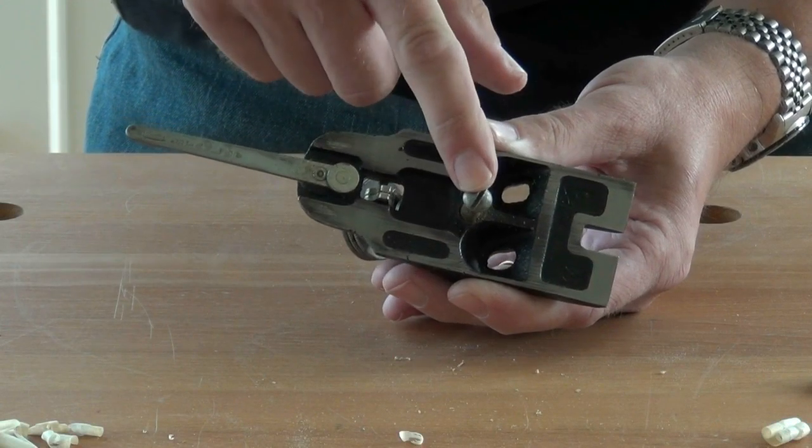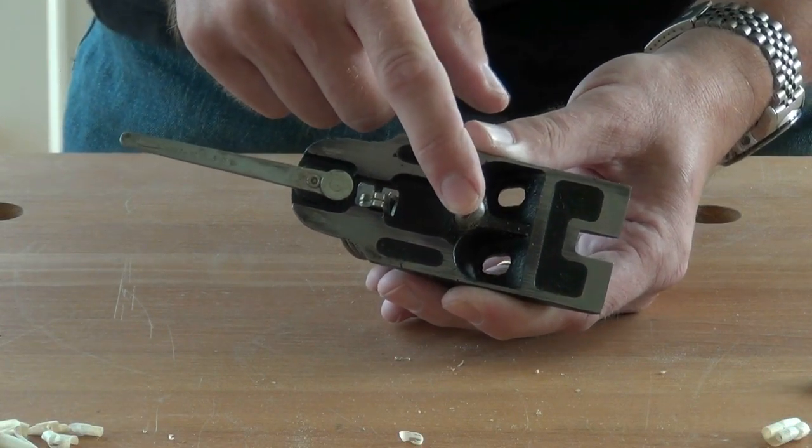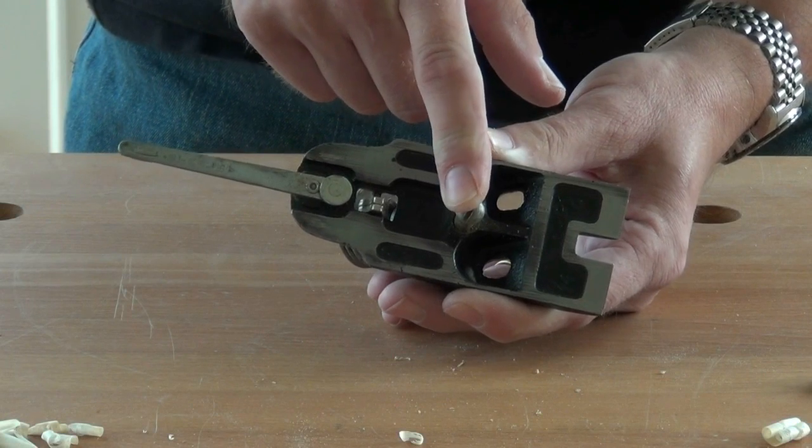The screw in the top of the frog is where the lever cap iron engages to hold the whole assembly together.